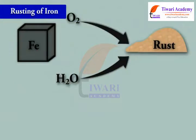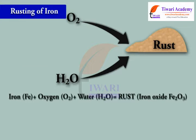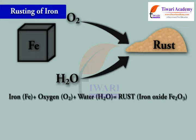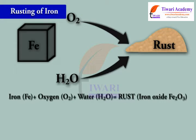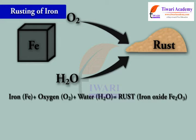The process of rusting can be explained by the following expression: iron (Fe) plus oxygen (O₂) plus water (H₂O) is equal to rust, iron oxide (Fe₂O₃).